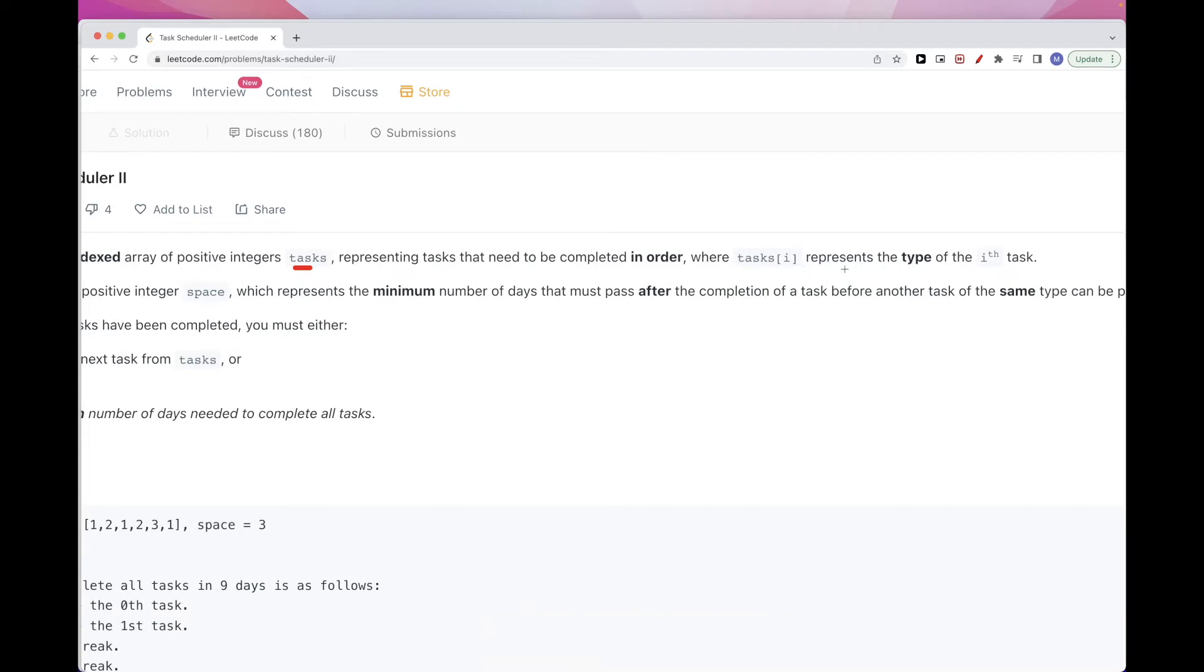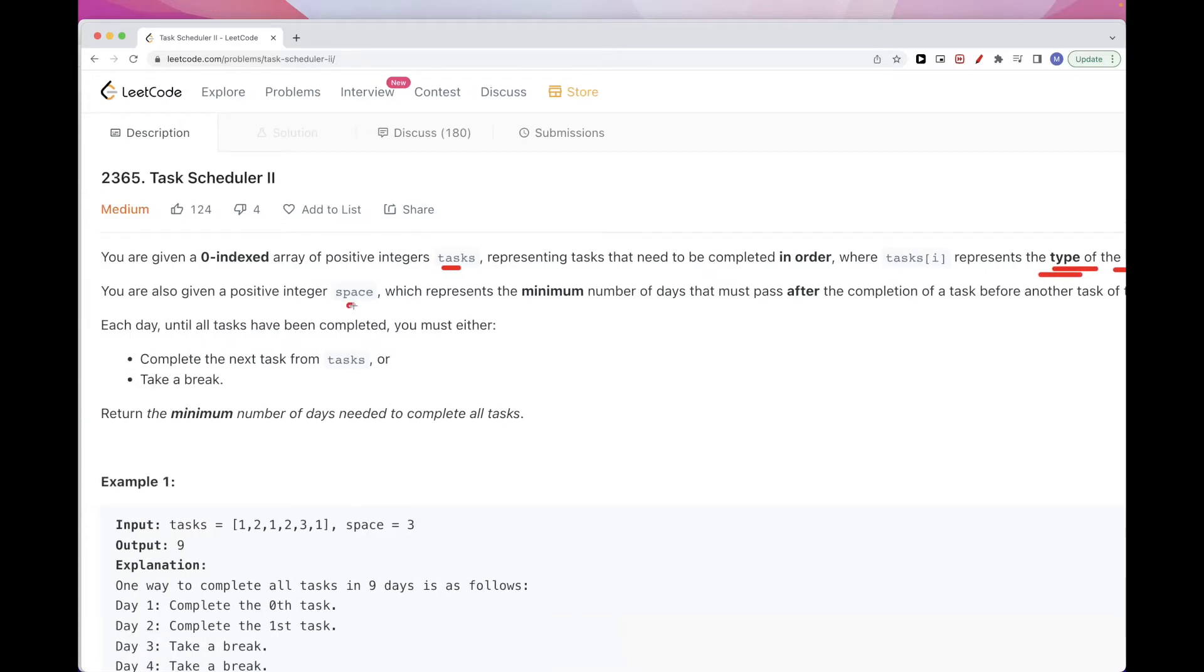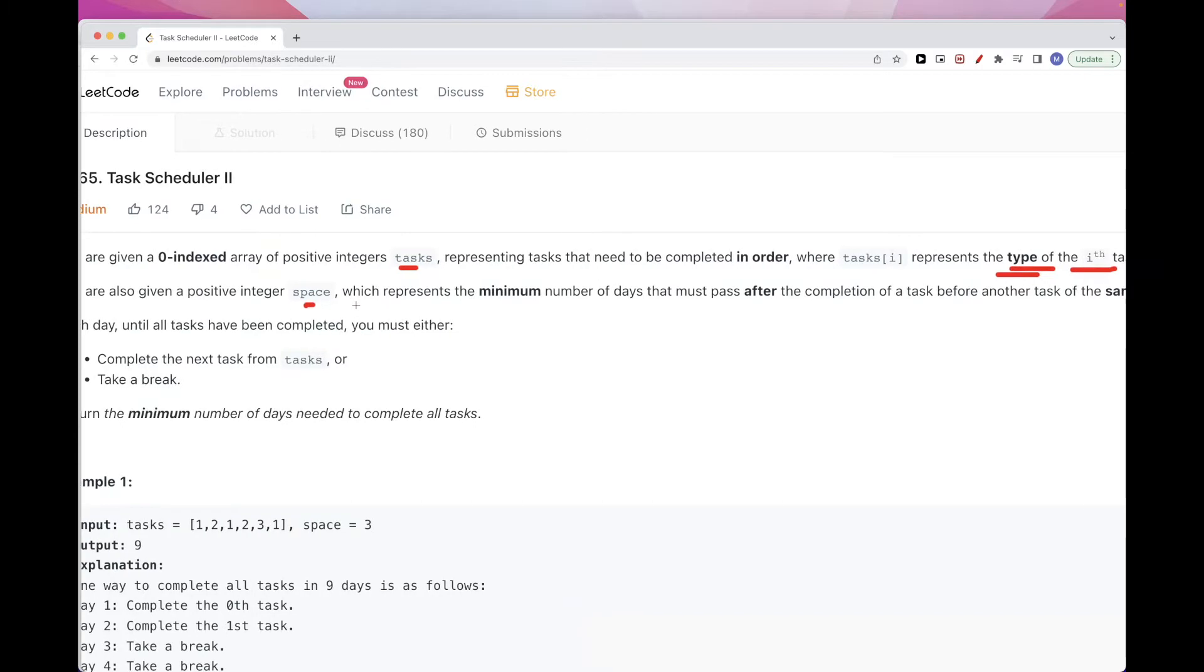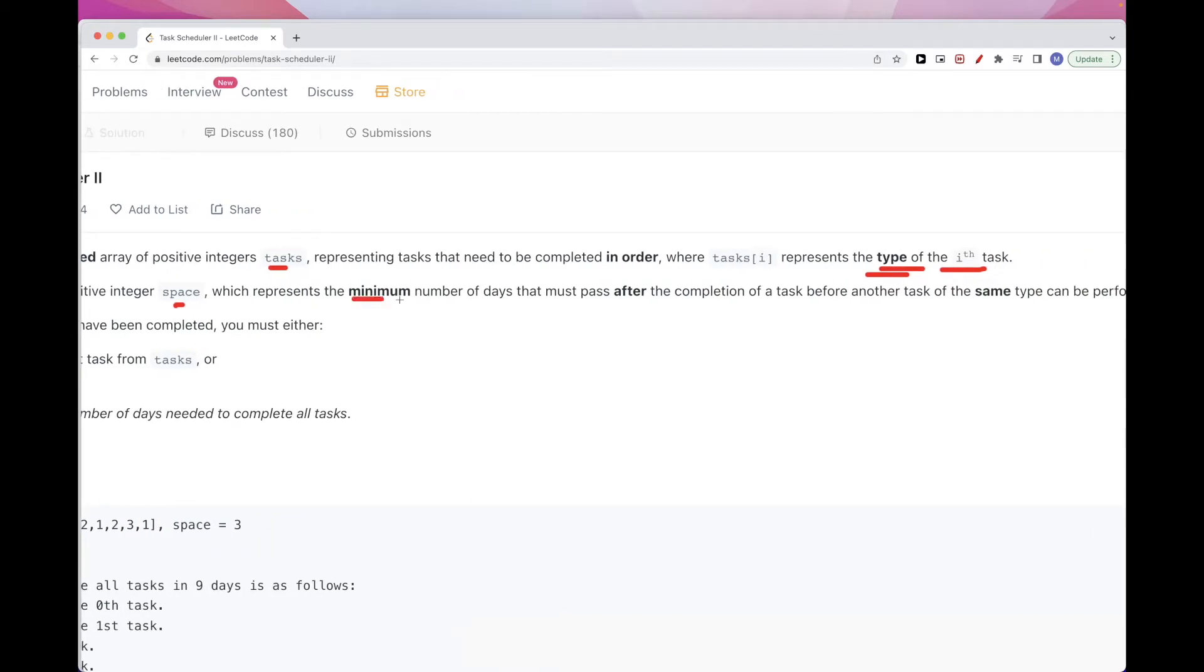And each value in the array represents the type of the ith task, so the type here. And we get space which represents how many days between two tasks of the same type. So the minimum number of days that must pass after completing a task of some type before we can do another task of the same type.